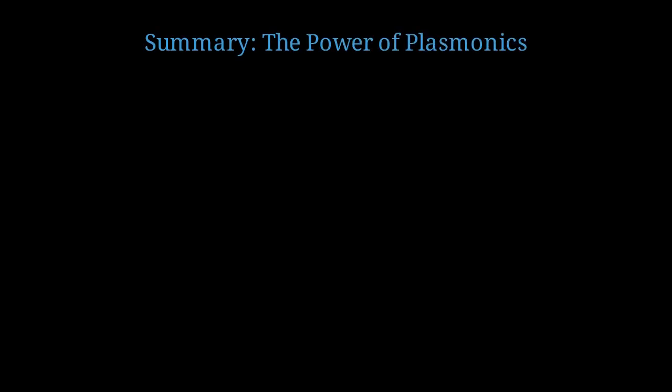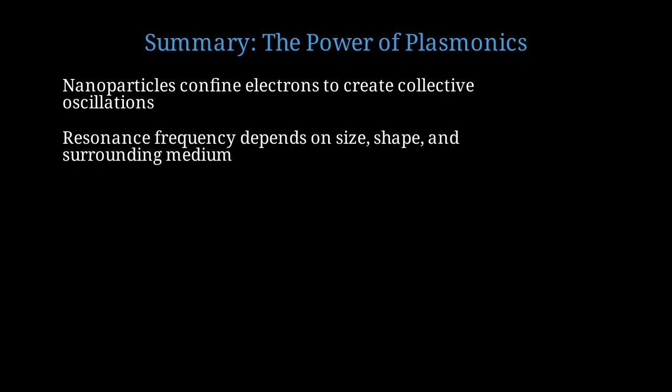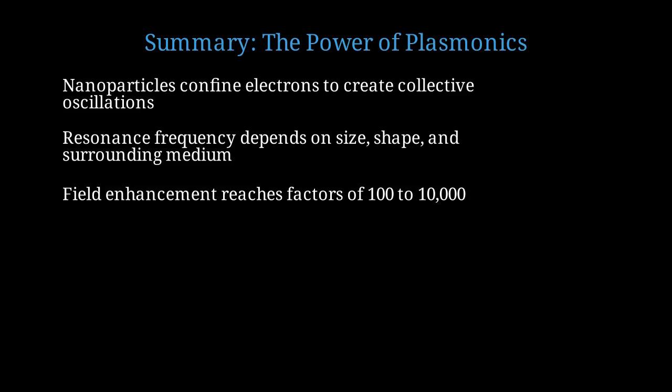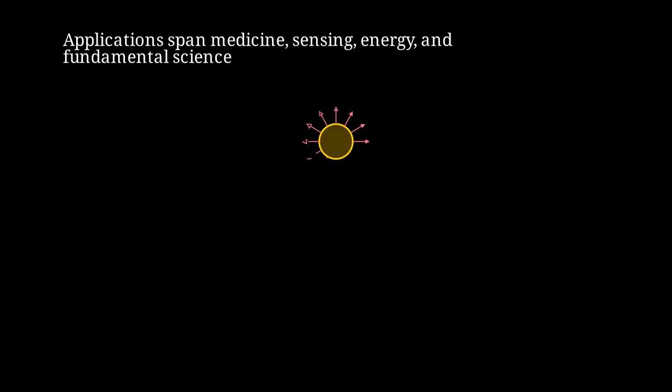Let's summarize what makes surface plasmon resonance so remarkable. Metallic nanoparticles confine free electrons to nanoscale volumes, enabling collective oscillations that bulk metals cannot support in the same way. The resonance frequency can be precisely tuned by controlling particle size, shape, and the dielectric constant of the surrounding medium. At resonance, local electric field enhancement can reach extraordinary factors of 100 to 10,000, enabling ultra-sensitive detection. The applications of plasmonic nanoparticles span medicine for targeted therapy, ultra-sensitive biosensing, enhanced solar energy conversion, and fundamental studies of light-matter interaction. Surface plasmon resonance represents a beautiful marriage of quantum mechanics, electromagnetism, and nanotechnology, opening doors to innovations we're only beginning to explore.